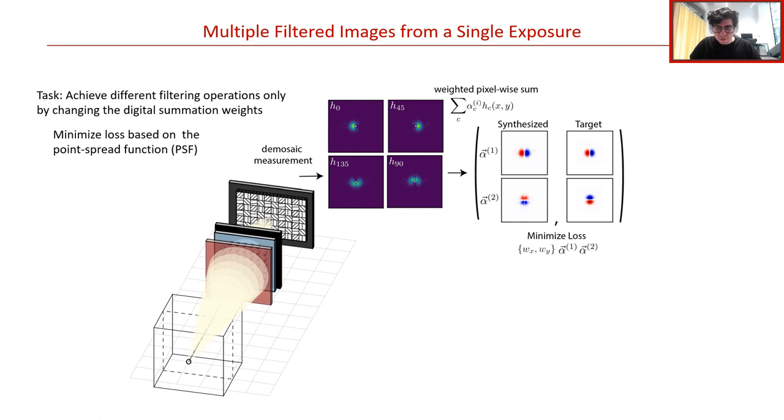The design task can then be formulated by computing the loss between the synthesized point spread functions, added through some set of weights alpha 1 or alpha 2, as shown here, and the target filters. In this case, we focus our attention on a class of steerable filters, and we desire one set of weights that yields a Gaussian derivative along one axis and another set of weights that yields the derivative along another axis. We then back-propagate gradients to optimize both the metasurface shape parameters and the summation weights.